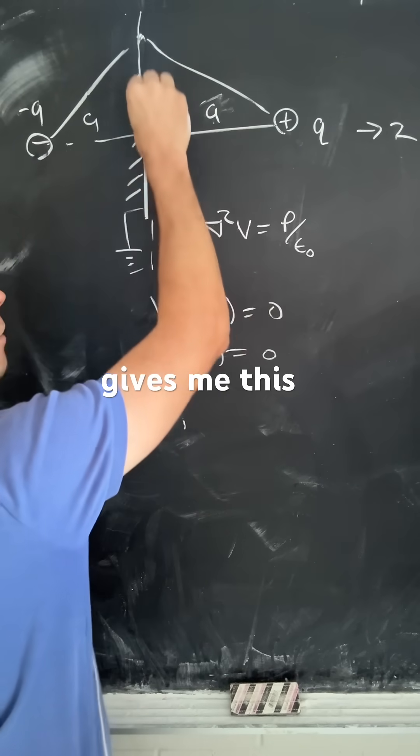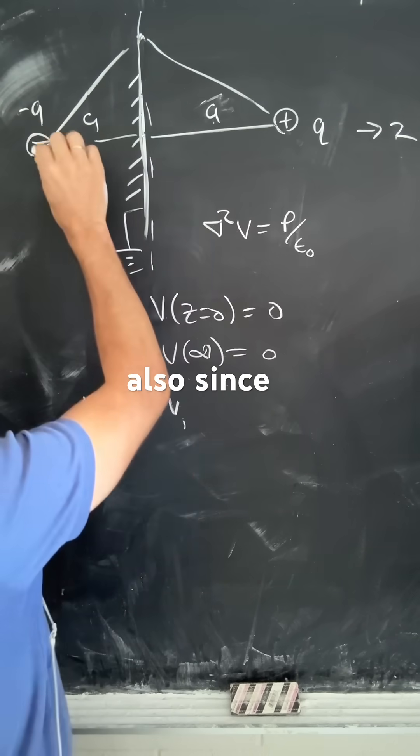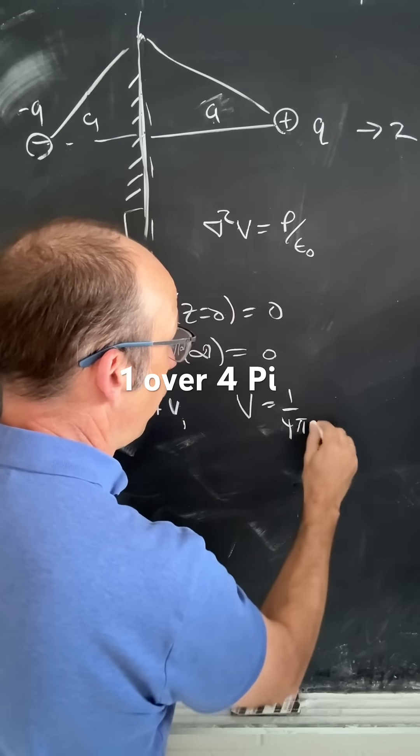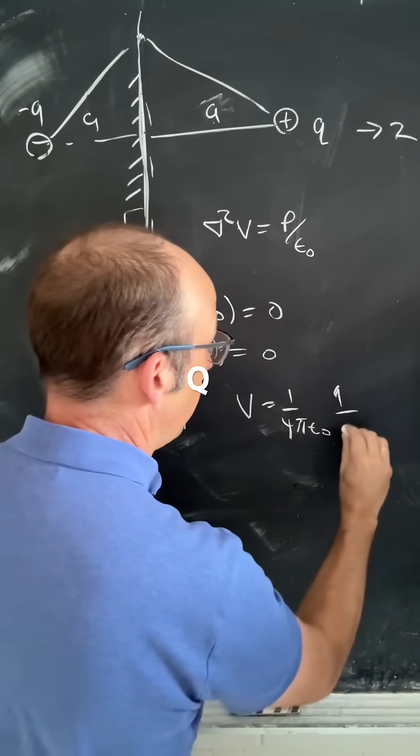So that gives me this boundary condition right there. And also, since they're point charges, remember the potential of a point charge: 1/(4πε₀) × q/r.